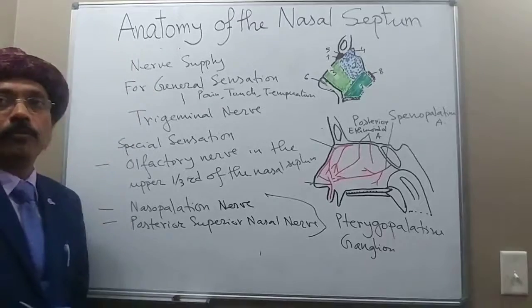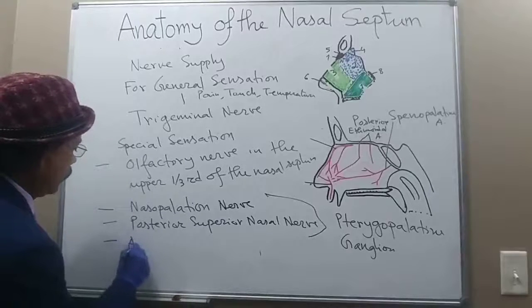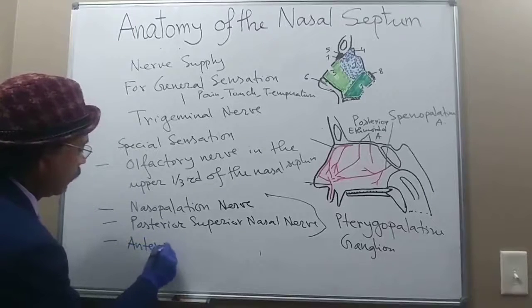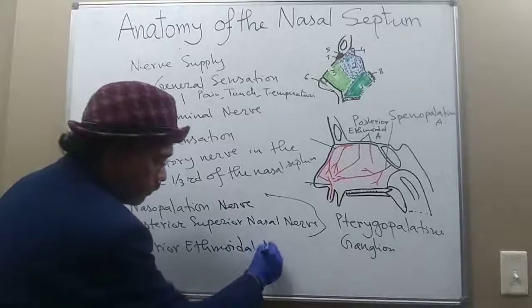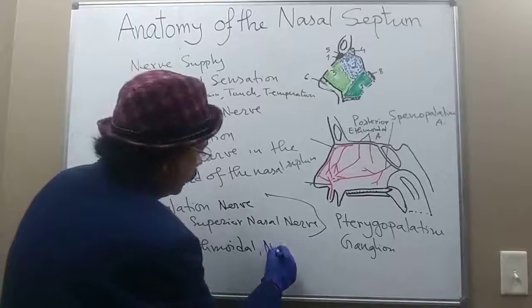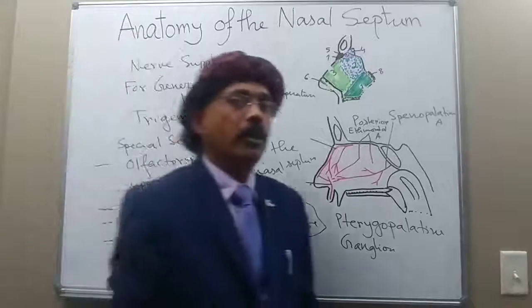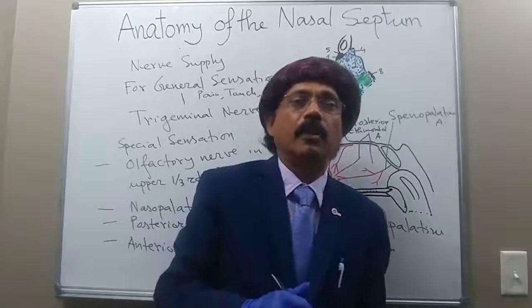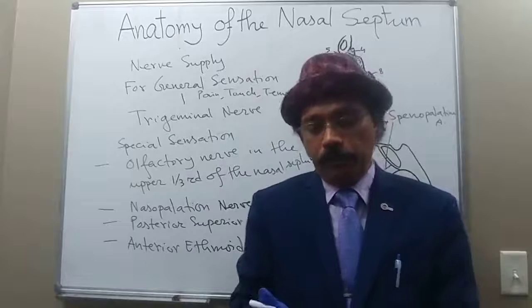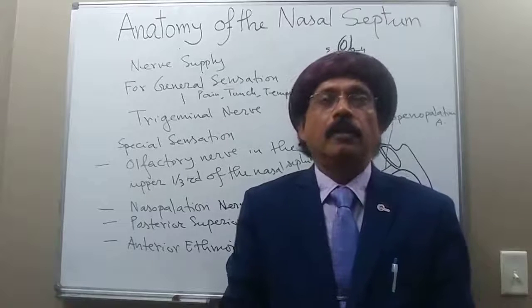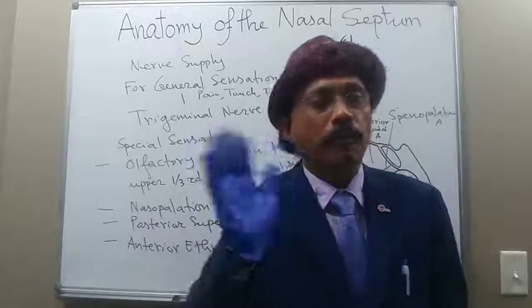We also get innervation from the anterior ethmoidal nerve, which is part of the ophthalmic division of the trigeminal nerve. The anterior ethmoidal nerve continues to the tip of the nose as the external nasal nerve. That is all about the anatomy of the nasal septum — please support my channel, subscribe, and have a nice day.